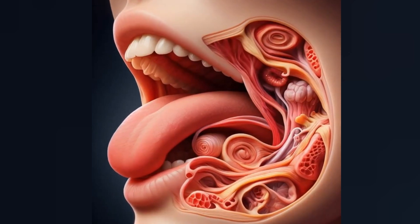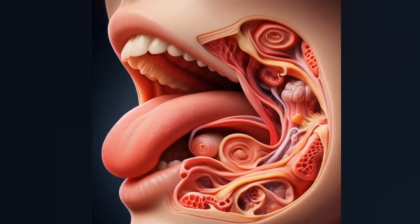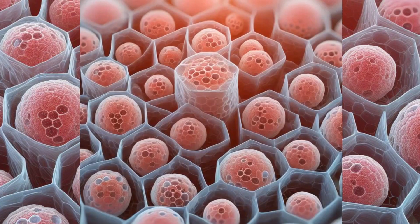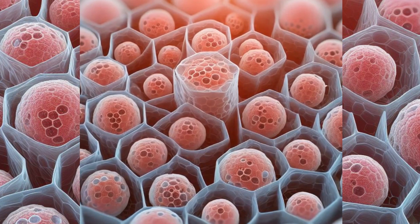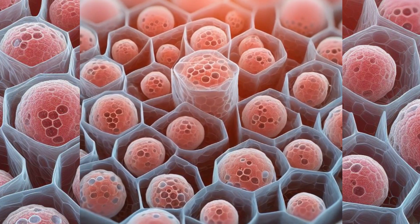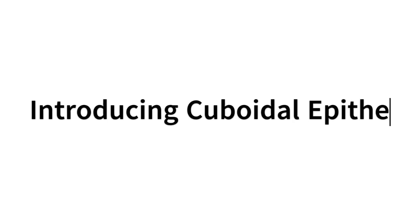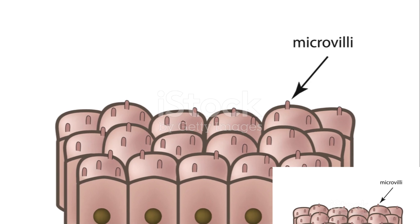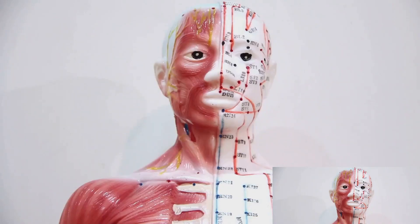Have you ever wondered what makes up the lining of our salivary glands and kidney tubules? It's a specialized type of cell layer known as cuboidal epithelium. Today we delve into the world of these tiny cube-shaped cells and discover their vital role in our bodies.